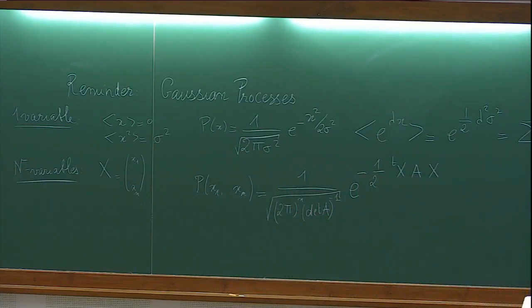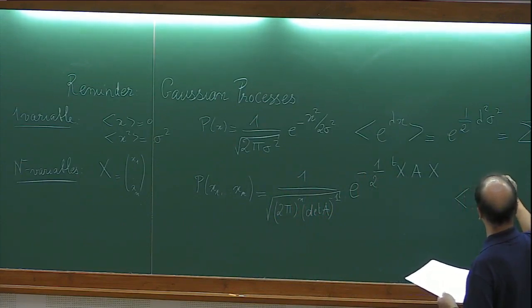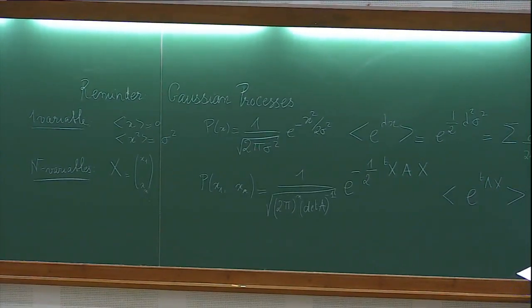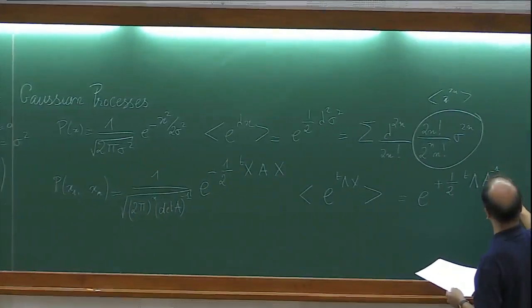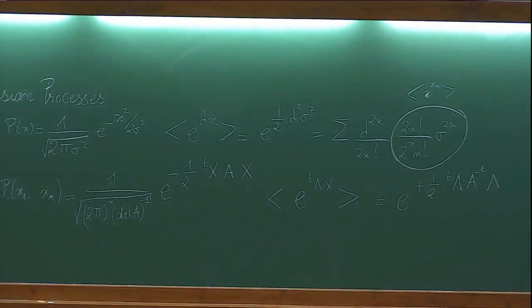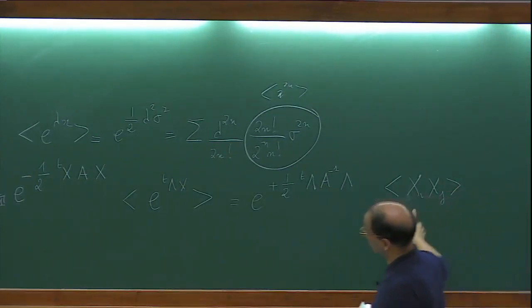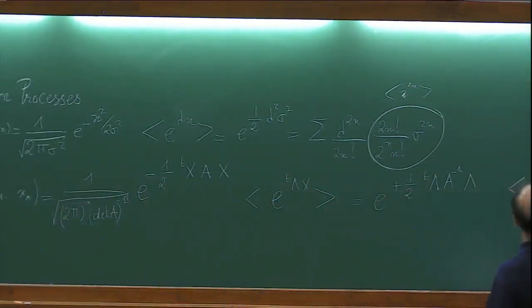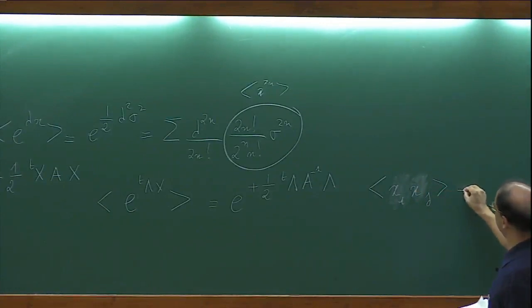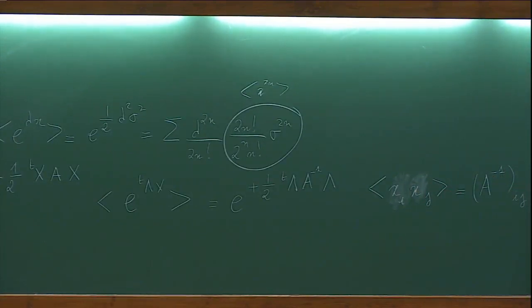The characteristic function, taking a row vector λ with n components, is exp(+½ λᵀ A⁻¹ λ). Taking derivatives with respect to λ gives all correlations. The most important result is that the correlation between two components xᵢ and xⱼ is the (i,j) component of the inverse matrix A⁻¹. These things are completely standard but useful.